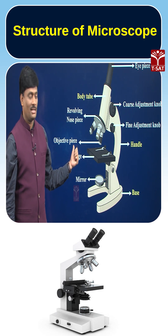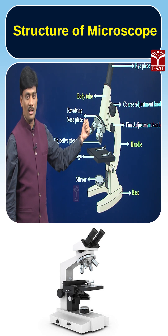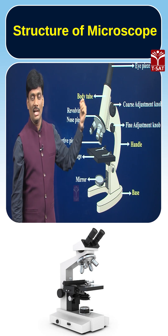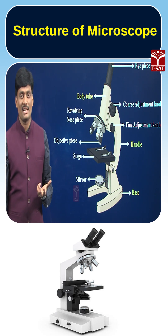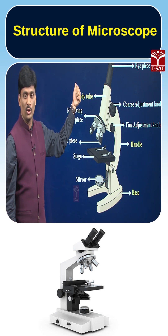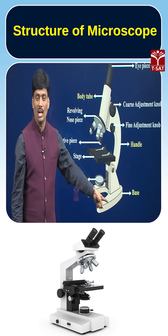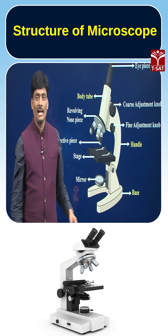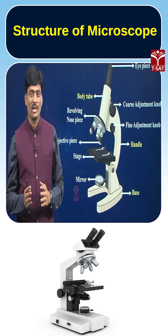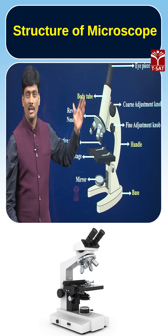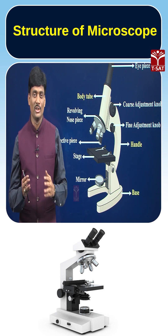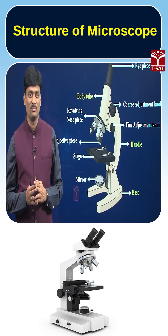Here we have the stage, where we place the glass slide. Next is the objective piece, also called the objective lens, and then the revolving nose piece. To summarize: the body tube, handle, and base are the structural components of a microscope, while all remaining parts are considered visual components.